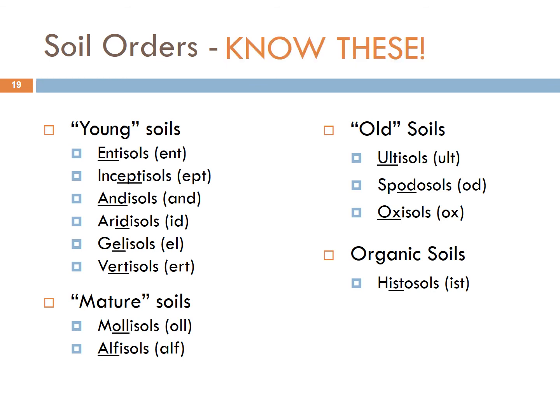Young soils: Entisols are represented by ENT, Inceptisols by EPT, Andisols by AND, Aridisols by ID, Gelisols by EL, Vertisols by ERT. Mature soils: Mollisols are represented by OLL, Alfisols by ALF. Old soils: Ultisols by OLT — as in ultimately weathered. Spodosols by OD — as in oddly weathered. Oxisols by OX. Organic soils are our Histosols, represented by IST.